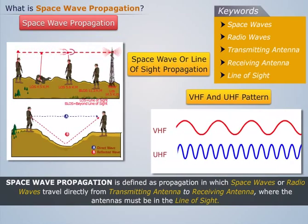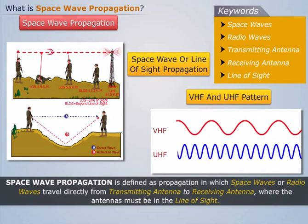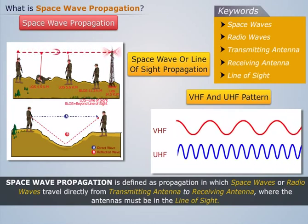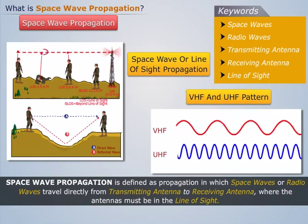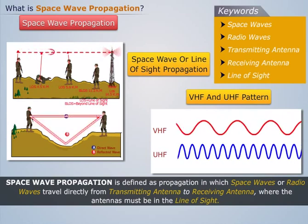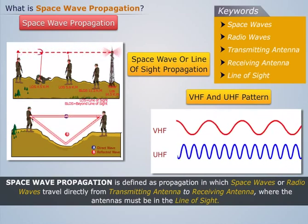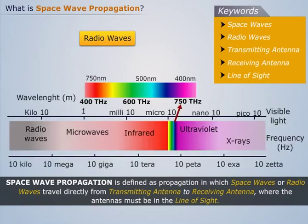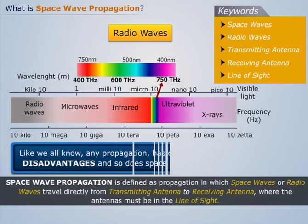The other name of space wave propagation is line-of-sight propagation, owing to the fact that transmitting and receiving bodies must directly face each other. Line of sight is that distance at which both the sender and receiver are in sight of each other. Space waves are also known as radio waves when the latter has higher frequency.